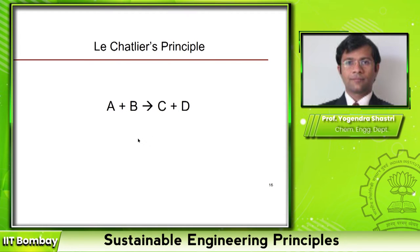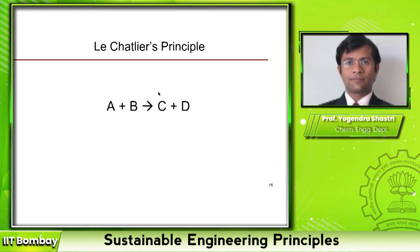Let us say C is the desired product and D is the byproduct. In order to push this reaction forward and have more C and D formed at a higher rate, you have two options: one is to add more A and B so that the equilibrium is pushed towards the right, or the second option is to remove C and D as they are formed, because then the quantity of C and D stays low and the equilibrium is pushed forward.